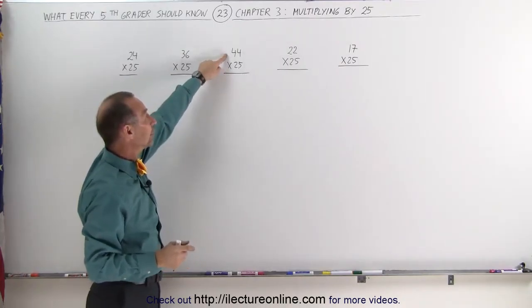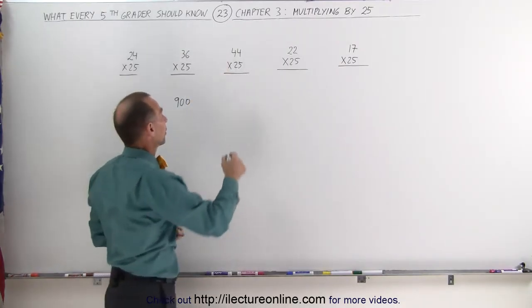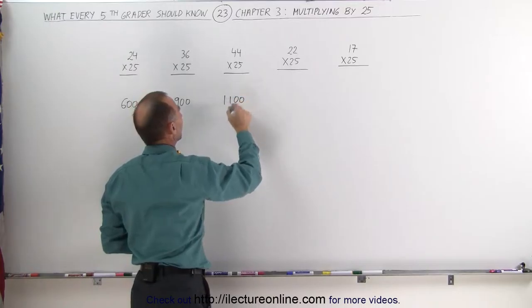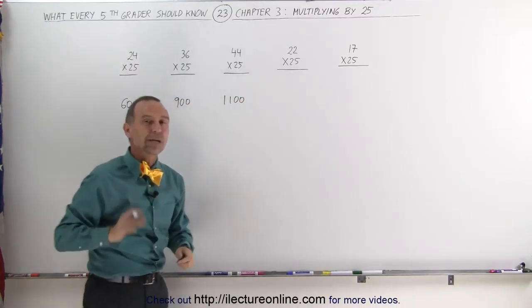How about 44 times 25? 44 divided by 4 gives you 11, add two zeros, gives you 1100. So that all works out really neat and really fast.